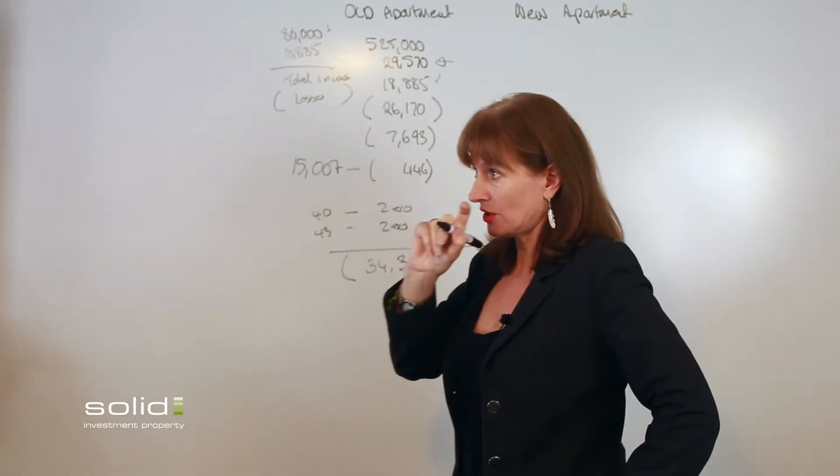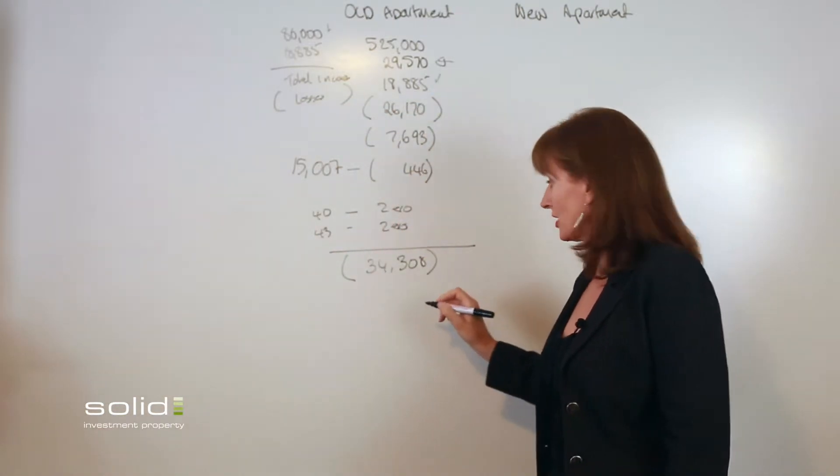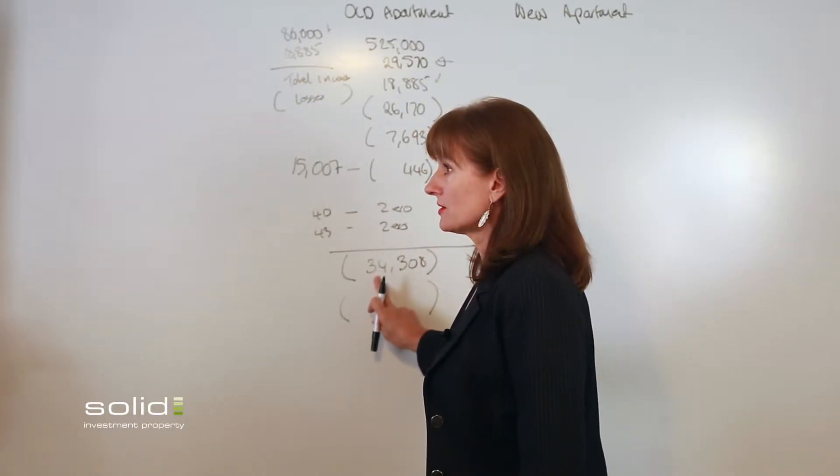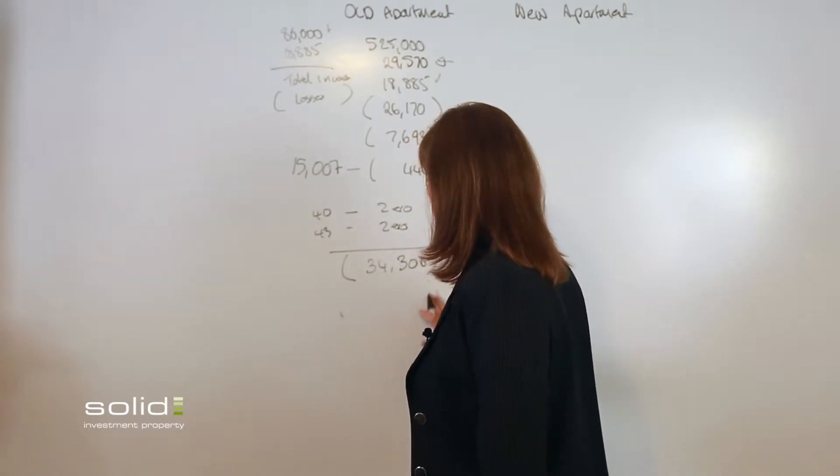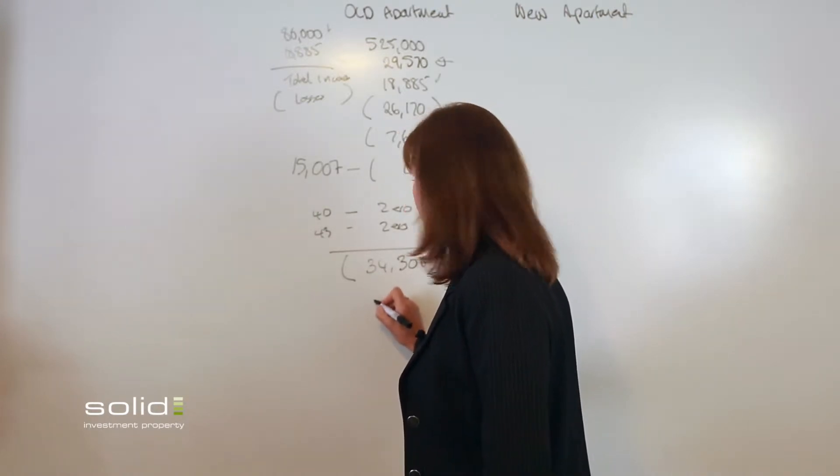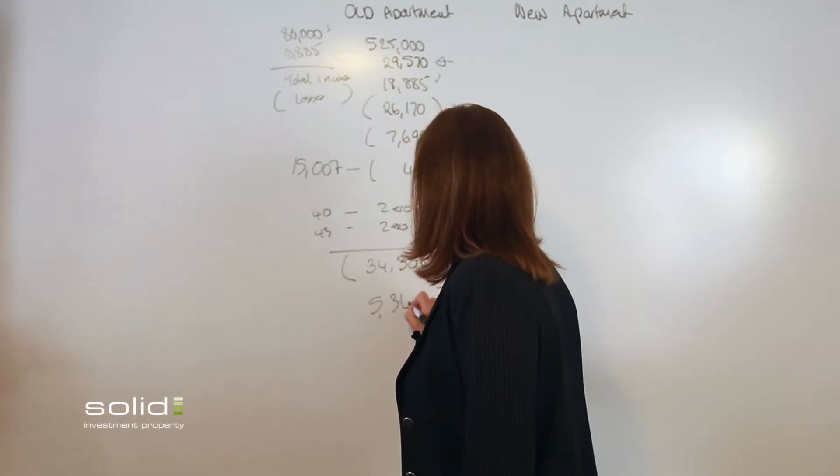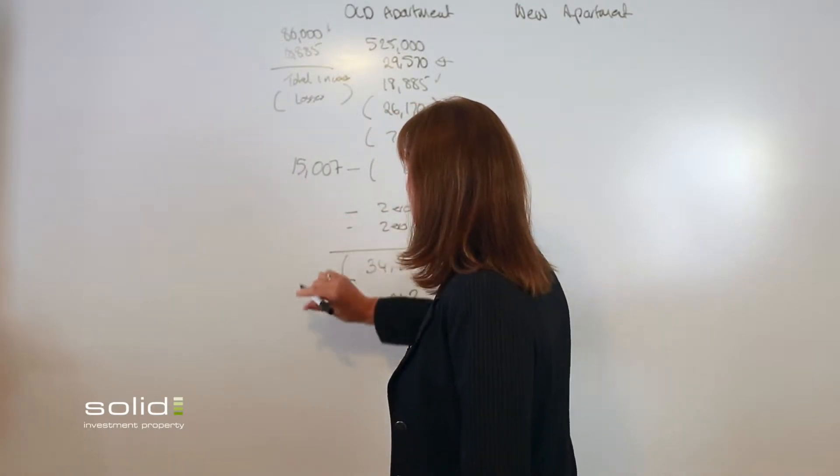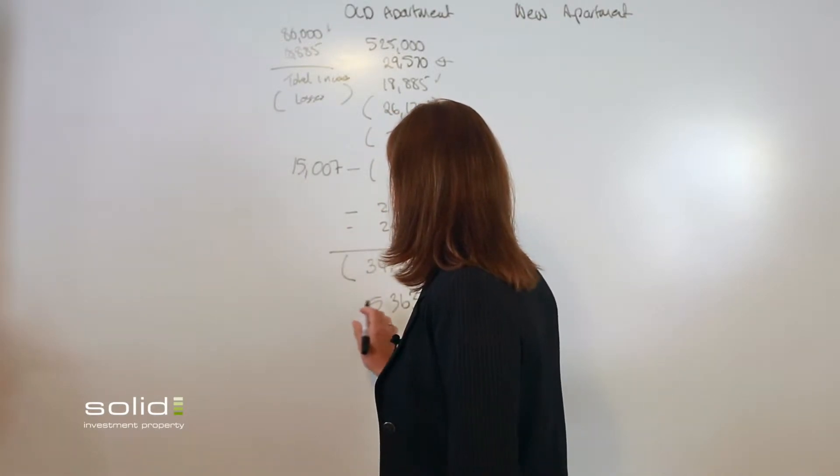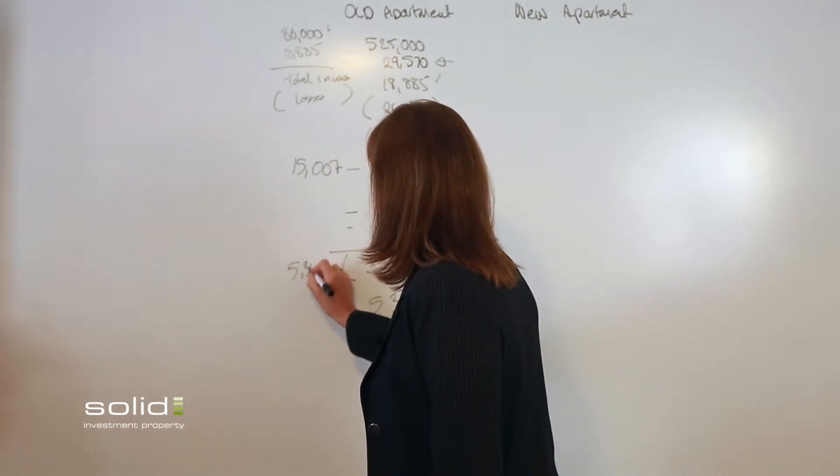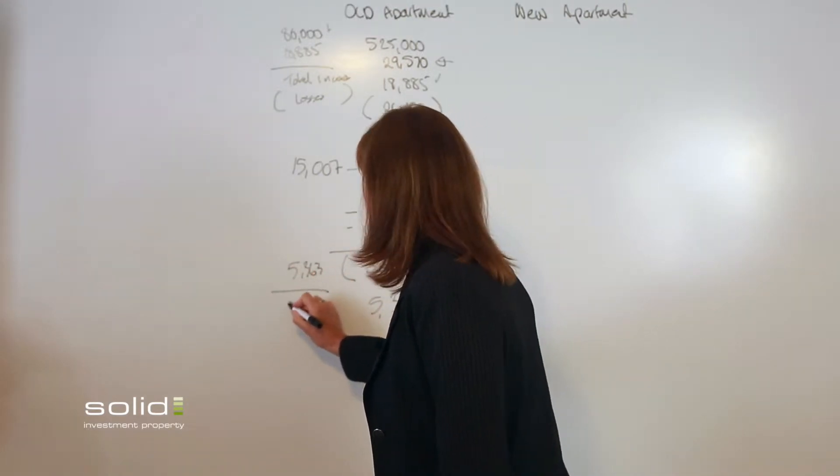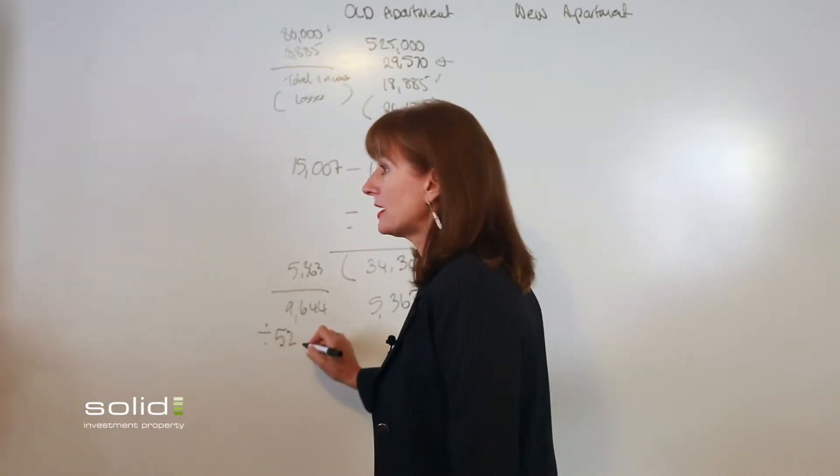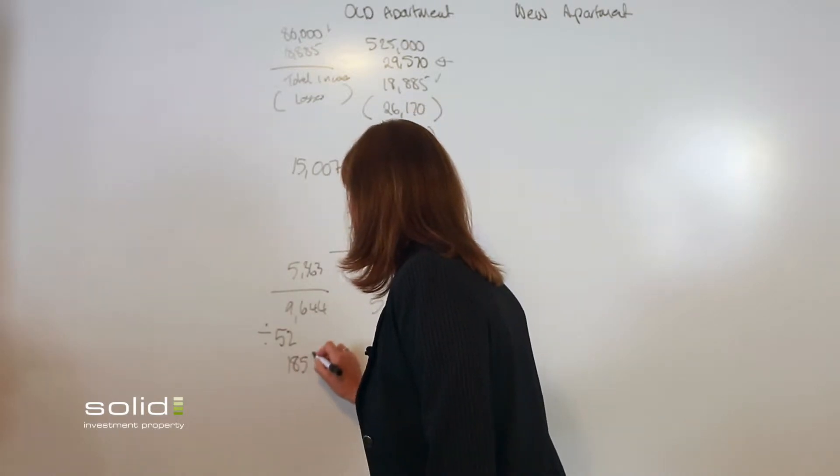Now in this case, you're actually running at an overall loss—you've got your $34,000, you're getting tax back from the government on your losses, your refund of $5,363, so that now takes, so with your $15,000 loss, you can now deduct your $5,363 from there. So your overall loss is $9,644. If you divide that by 52 weeks in the year, you're out of pocket $185 per week.